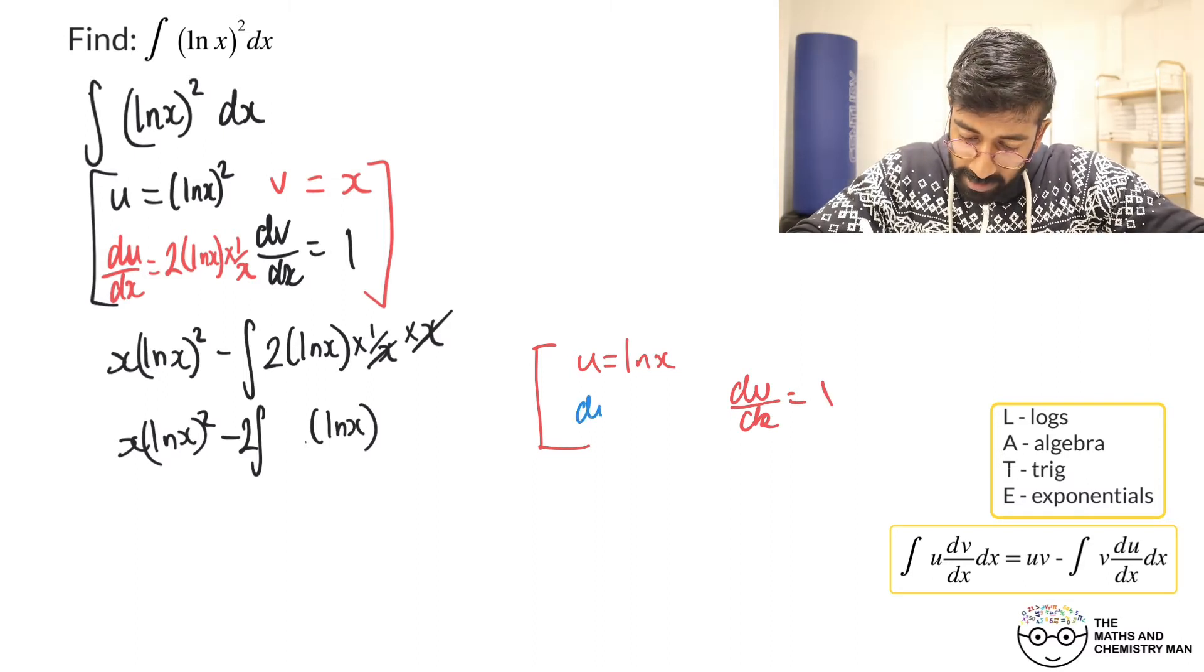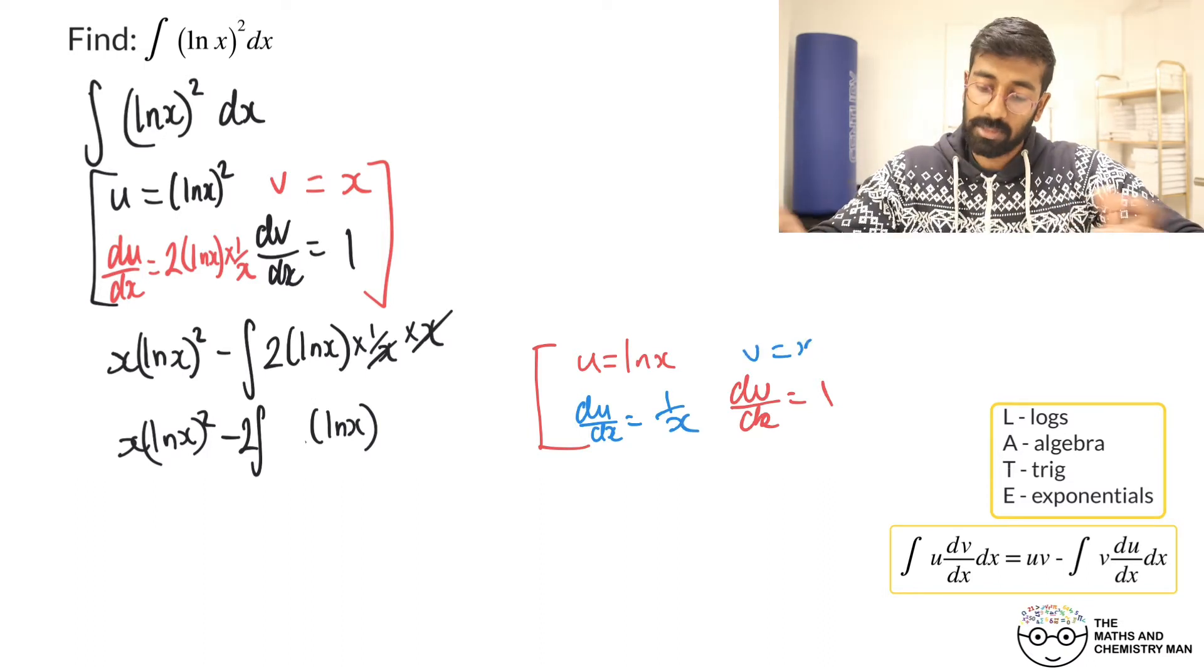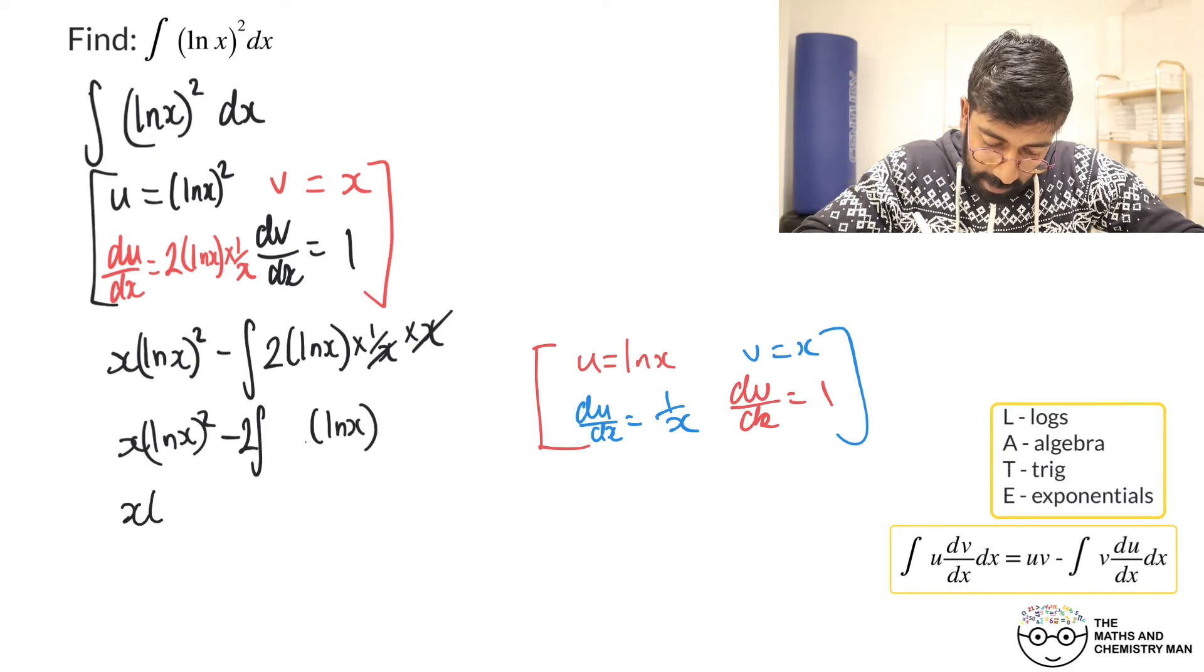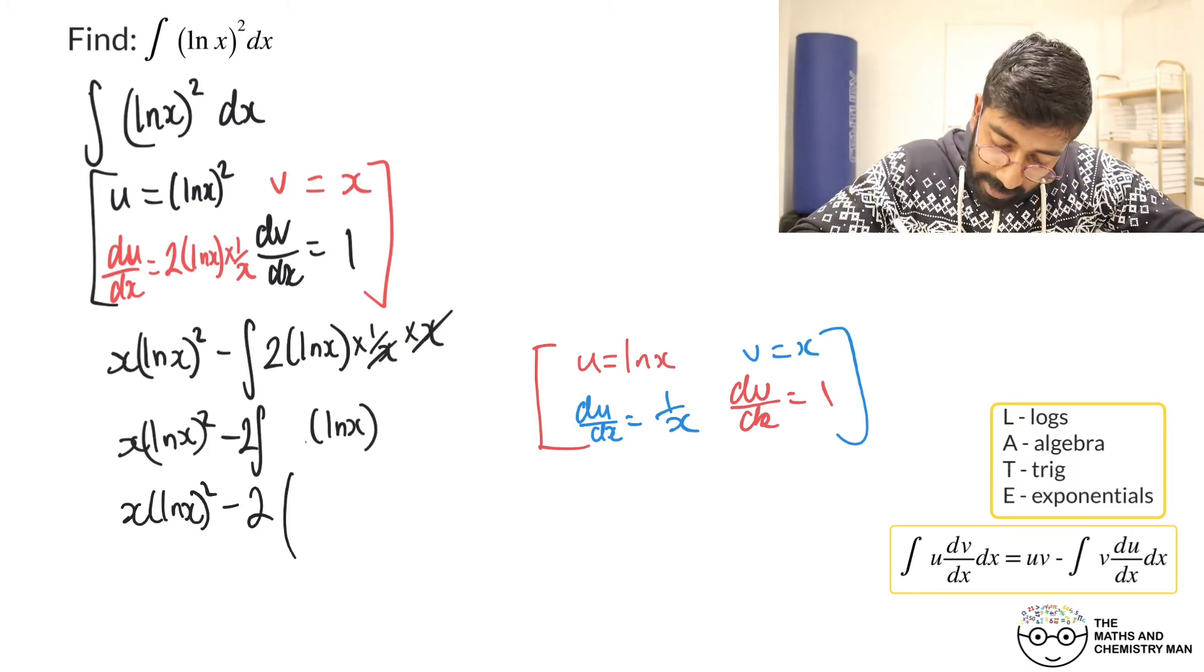Let's just complete this. du/dx is going to be 1/x and v would equal x. So what have we got now? We've got x ln(x) squared minus 2 lots of, let's open up a little bracket here and apply our by parts for the second time. That's going to be x ln(x) subtract